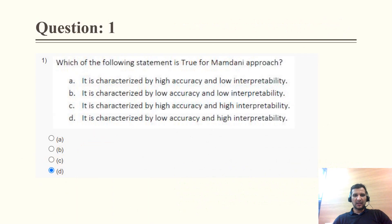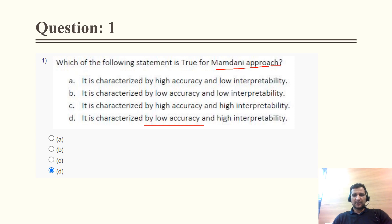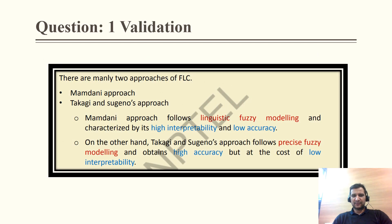Question 1: Which of the following statements is true for the Mamdani approach? There are two types of approaches: the Mamdani approach and the Sugeno approach. For the Mamdani approach, the correct option is D — it gives us low accuracy but high interpretability. In the case of the Sugeno approach, it is the reciprocal: accuracy will be high but interpretability will be low.